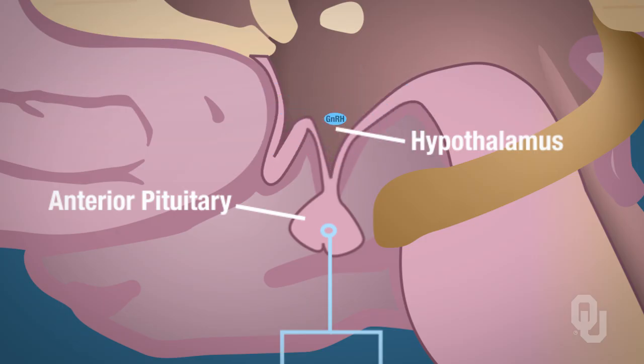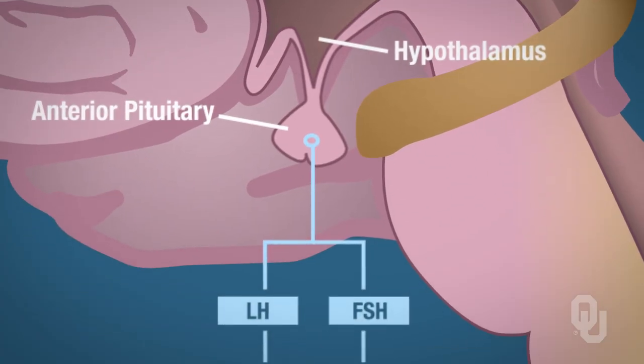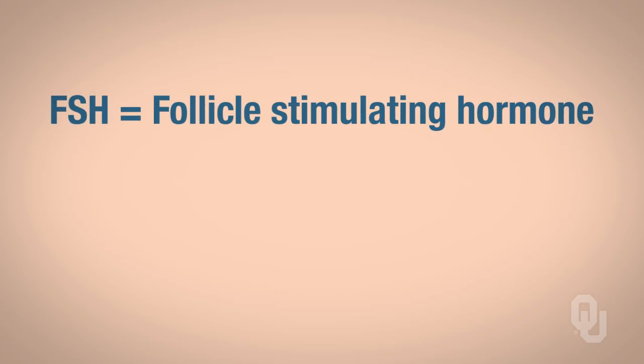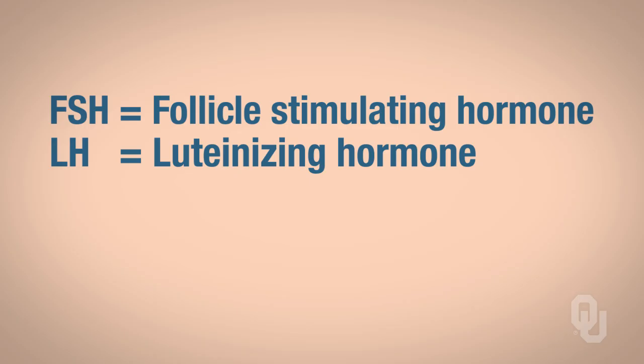Once secreted, gonadotropin-releasing hormone will bind to receptors on the anterior pituitary, causing the endocrine cells to synthesize and secrete both FSH and LH. FSH stands for follicle stimulating hormone, and LH is luteinizing hormone.